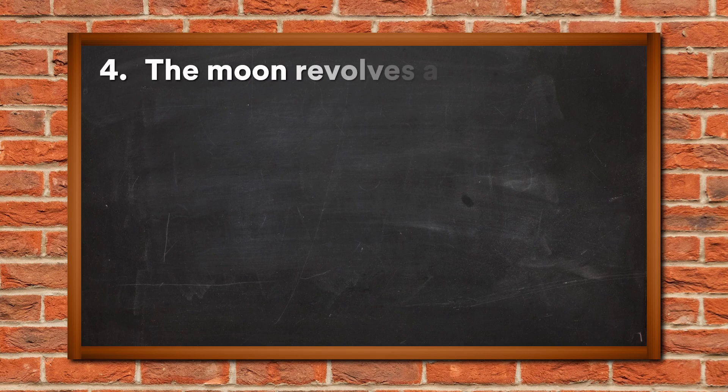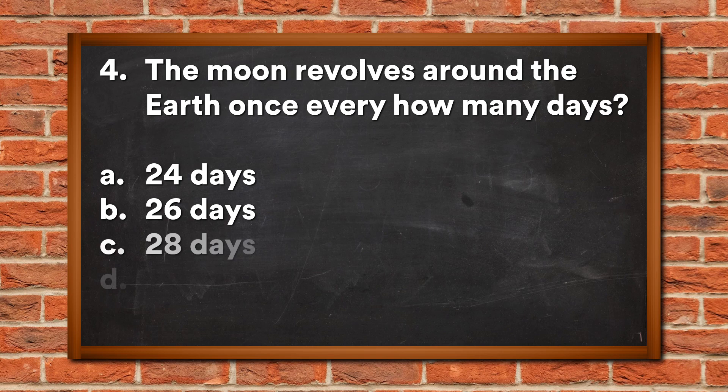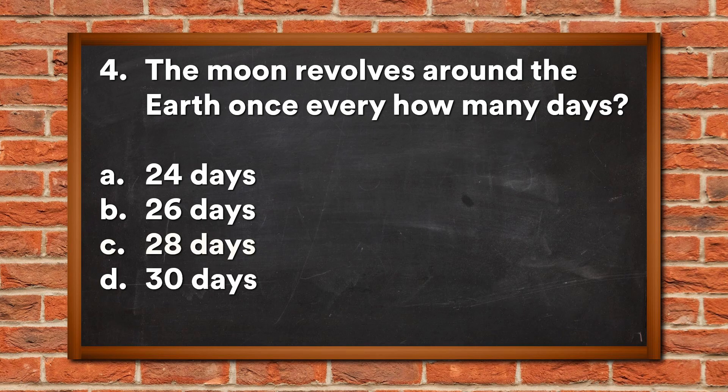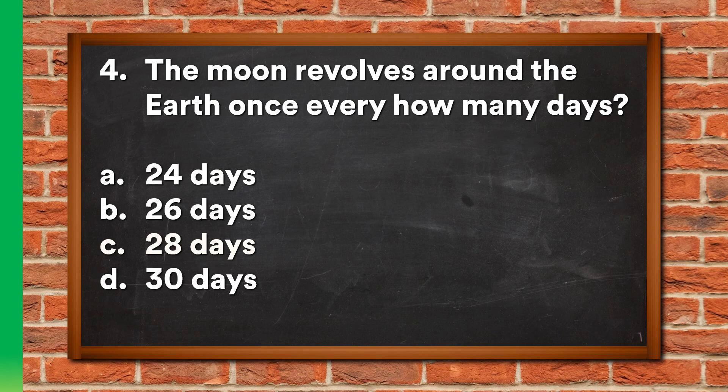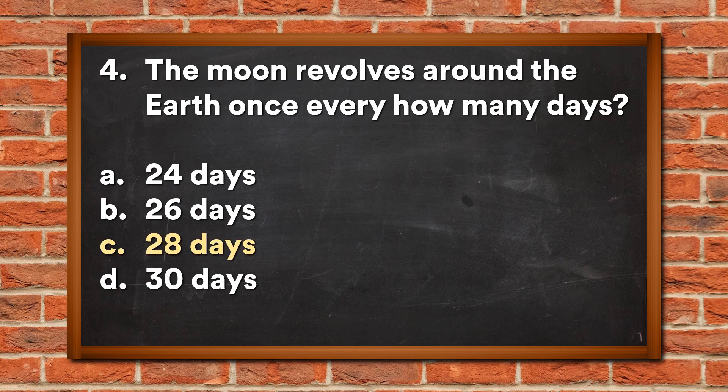Question 4: The moon revolves around the earth once every how many days? A. 24 days, B. 26 days, C. 28 days, D. 30 days. The answer is C, 28 days.